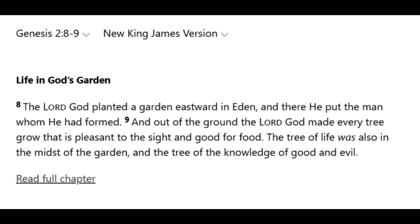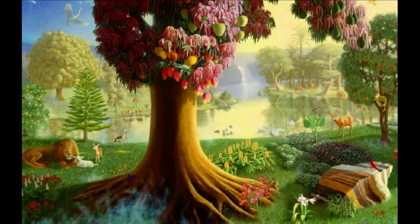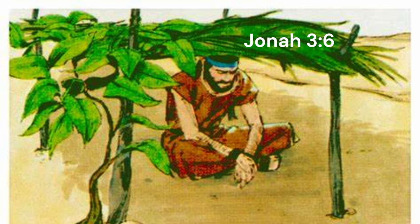Verse 9: 'And out of the ground the Lord God made every tree grow that is pleasant to the sight and good for food. The tree of life was also in the midst of the garden, and the tree of the knowledge of good and evil.' So God makes everything grow rapidly, and he does this supernaturally — just like what we see in Jonah, chapter 3, verse 6. This also means that God would have provided the first round of crops freely for Adam.